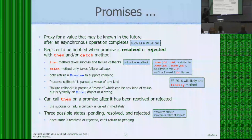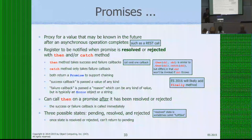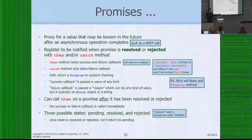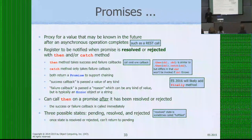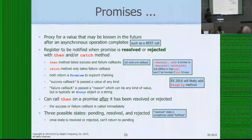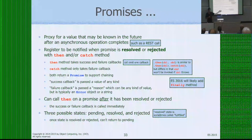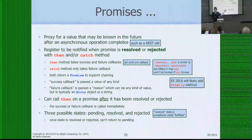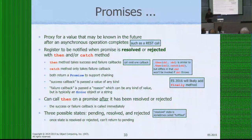ES2016 may add a `finally` method for code you want to run in either case. You can call `then` on a promise even after it has been resolved — the promise still knows what it resolved to and will call the callback immediately with that result. A promise is in one of three states: pending, resolved, or rejected. Once resolved or rejected, it stays in that state permanently.